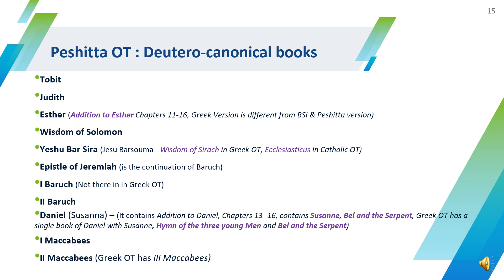The Protestant group calls the Deuterocanonical books apocrypha books. The additional books found in the Peshitta Bible are Tobit, Judith, additions to Esther, Wisdom of Solomon, Yeshu Basaira (also known as Wisdom of Sirach or Ecclesiasticus), Epistle of Jeremiah, 1st and 2nd Baruch, 1st and 2nd Maccabees, additions to Daniel chapters 13–16 — which contains Susanna, Bel and the Serpent, and the Hymn of the Three Young Men.